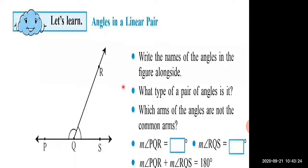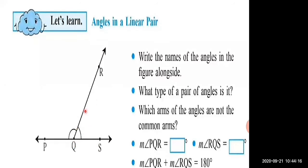Very good children. What type of pair of angles is it? You have learned in the previous lesson that two angles having a common arm and separate interiors are adjacent angles. So the pairs of angles are adjacent as well as supplementary. Ray QP and ray QS are not the common arms — they are the opposite arms of common arm ray QR.